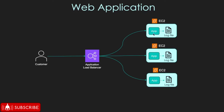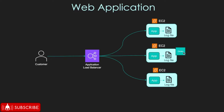Any application that you create is going to generate log files. A log file captures important activity happening within the application. And in this situation, your application is running across multiple servers, and each instance of the application is generating its own log file on a machine. When a customer places an order on your website, the load balancer can forward that request to any of these EC2 machines.